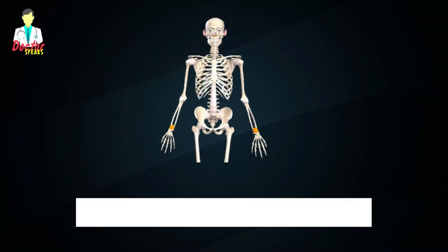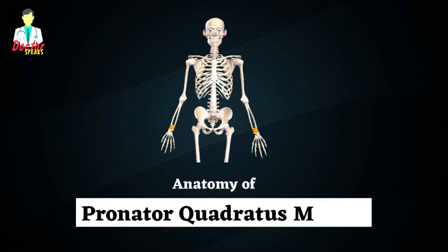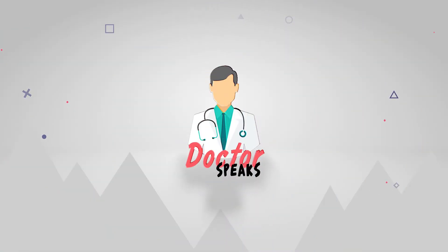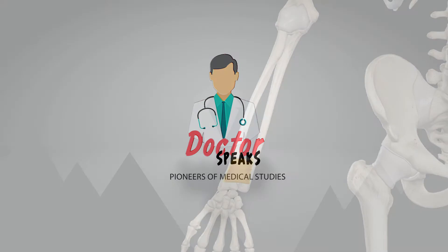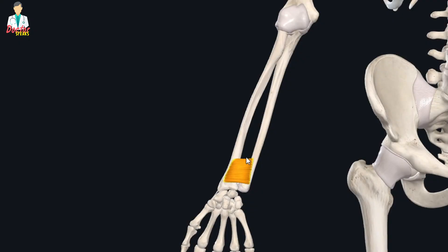Hello everyone, welcome back. Today we are going to study the anatomy of the pronator quadratus muscle. The pronator quadratus is a quadrangular flat muscle of the anterior compartment of the forearm, and it is one of the three deep muscles of the anterior compartment of the forearm.